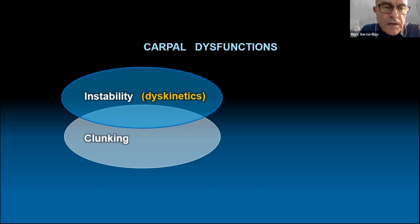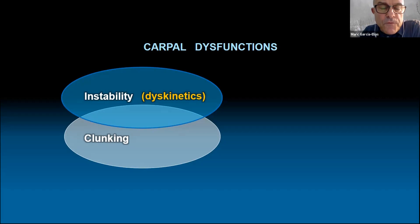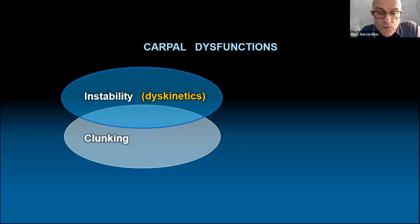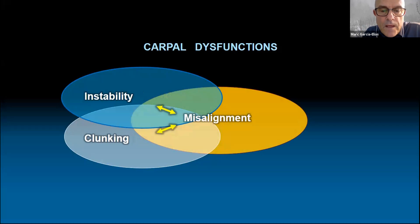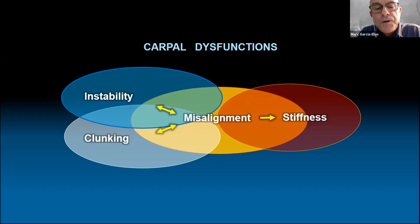We have these two Venn diagrams — cases of instability and clunking will be placed in the middle where they overlap. A clunking case we just saw is one example of dyskinematics that is not unstable — it's a friend of mine with a big clunk but no yielding when carrying loads. So if there is no kinetic problem, he cannot be unstable, and yet he has clunking. Clunking would be dyskinematics; instability would be the kinetic dysfunction. With time, all those dysfunctions sooner or later will develop permanent carpal misalignment, and those misalignments may evolve into carpal stiffness. A stiff wrist, however, will rarely be unstable.